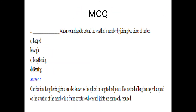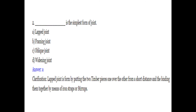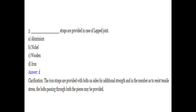Let's look at MCQ questions. First question: which joints are employed to extend the length of a member by joining two pieces of timber? The answer is lengthening joints, also known as splice or longitudinal joints. The method depends on the situation of the member in the frame structure. Second question: the lapped joint is the simplest form of joint — two timber pieces placed one over the other for a short distance, bound with a strap.